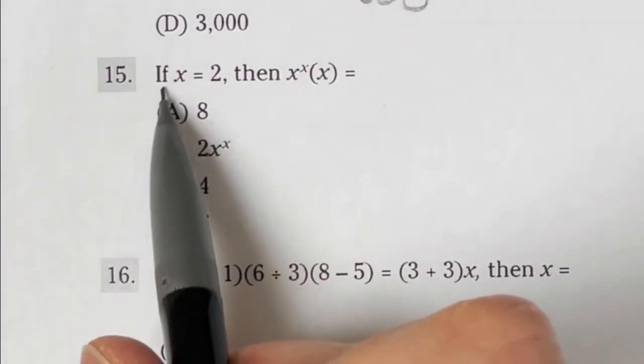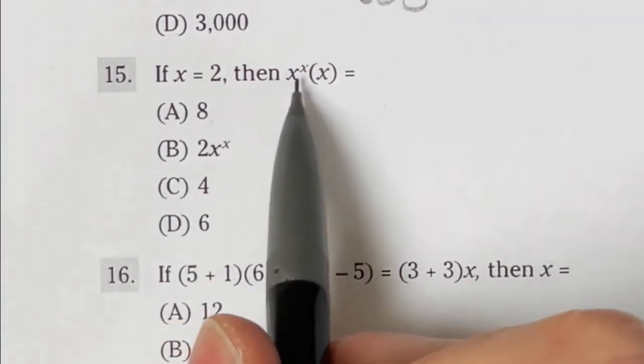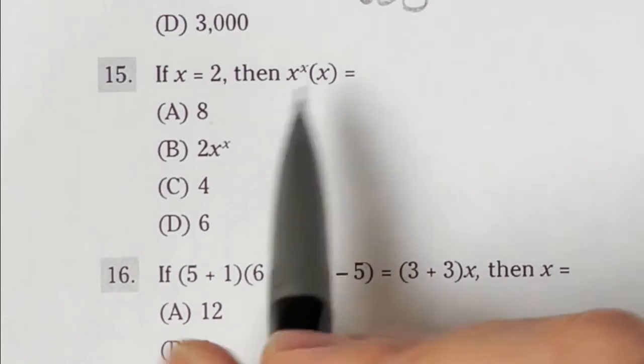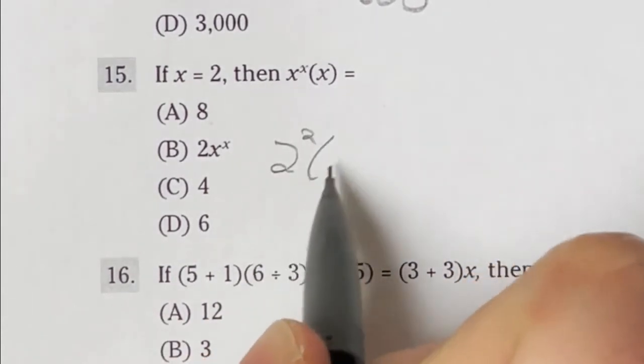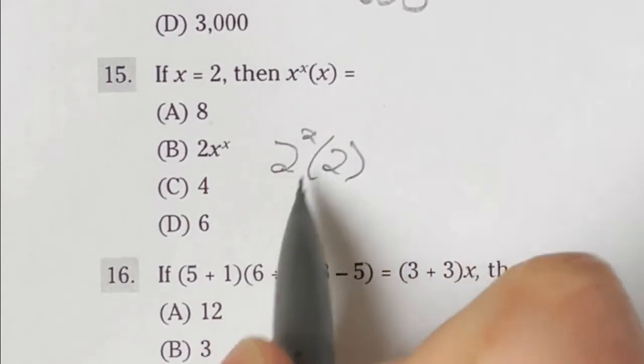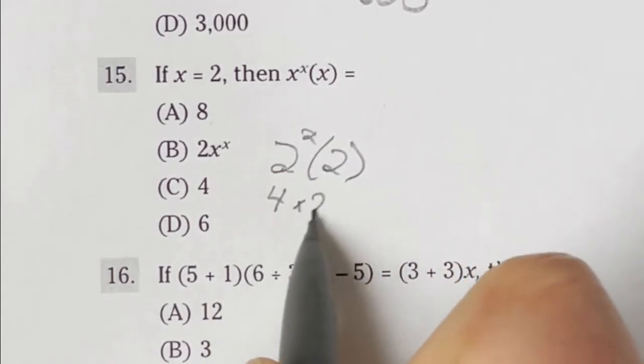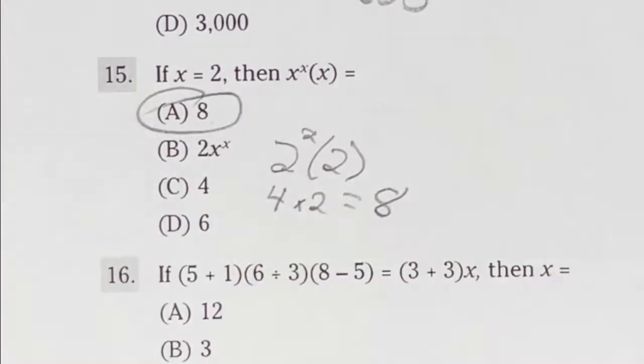Number 15 on the ASVAB says if x is equal to 2, then what is x to the x times x? So in other words, we're looking at 2 to the second power times 2. So 2 to the second power is just 4 times another 2 would end up giving me 8, which is answer A.